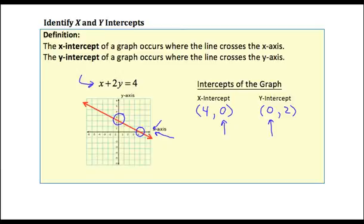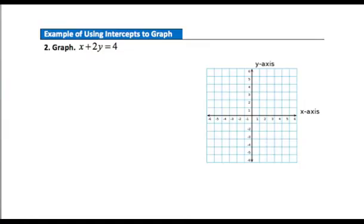In the next examples we're going to graph using the intercepts, which means we are going to use these zeros. The x-intercept occurs when y is 0, and the y-intercept occurs when x is 0. We're going to use these zeros to graph the equations, and it's going to make it quite simple. Let's take a look at an example to help you understand how to use the intercepts to graph a linear equation.